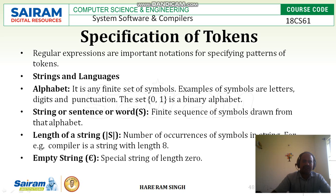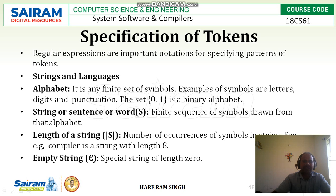Let us see string and language. First, we will study the alphabet. What is an alphabet? It is a finite set of symbols. Examples of symbols are letters, digits, or punctuations. For example, {0, 1} is a set of two digits — it is a binary alphabet and it is called a binary alphabet.